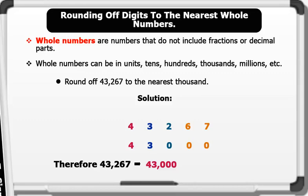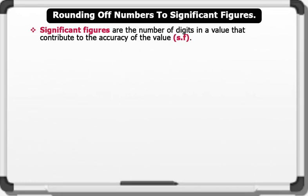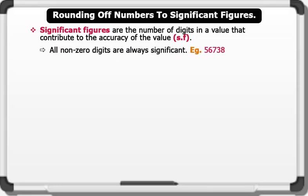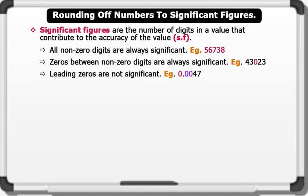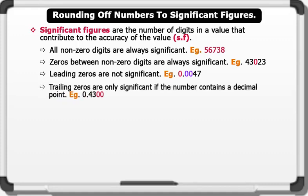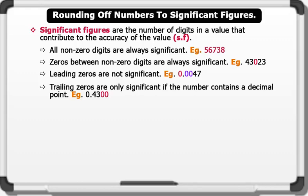Significant figures are the number of digits in a value that contribute to the accuracy of the value. Note the following: one, all non-zero digits are always significant; two, zeros between non-zero digits are always significant; three, leading zeros are not significant; and four, trailing zeros are only significant if the number contains a decimal point.